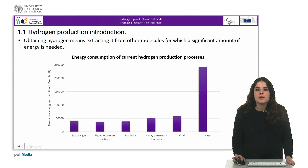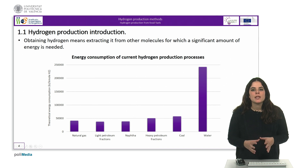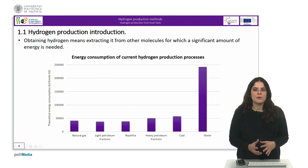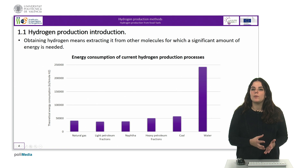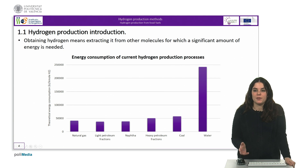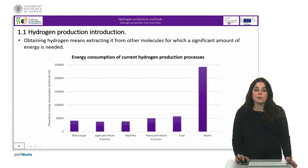In any case, obtaining hydrogen means extracting hydrogen from other molecules, for which a significant amount of energy is needed. Extraction is more affordable from compounds that are in high energy states such as fossil fuels. In this case, the process itself produces some of the energy needed, unlike what happens with compounds in lower energy states such as water, whose dissociation demands a large amount of energy. This can be appreciated in the graph where hydrogen production by electrolysis is notable for its high energy consumption compared to the other fossil fuel production methods.